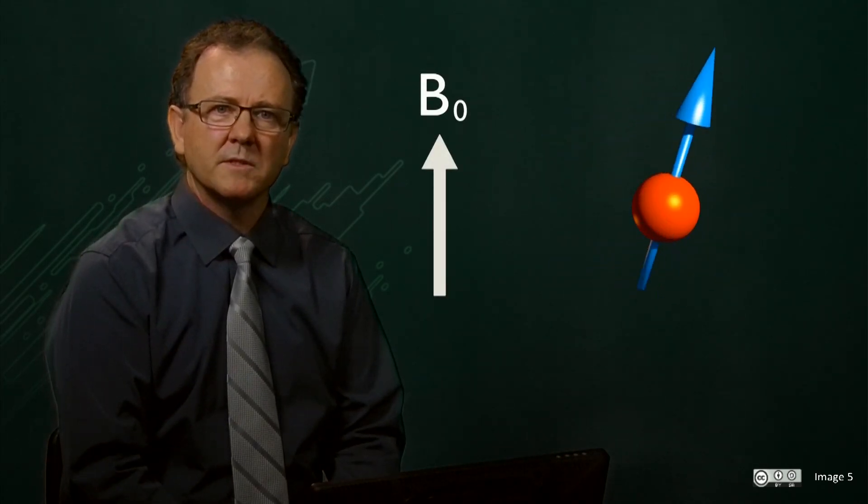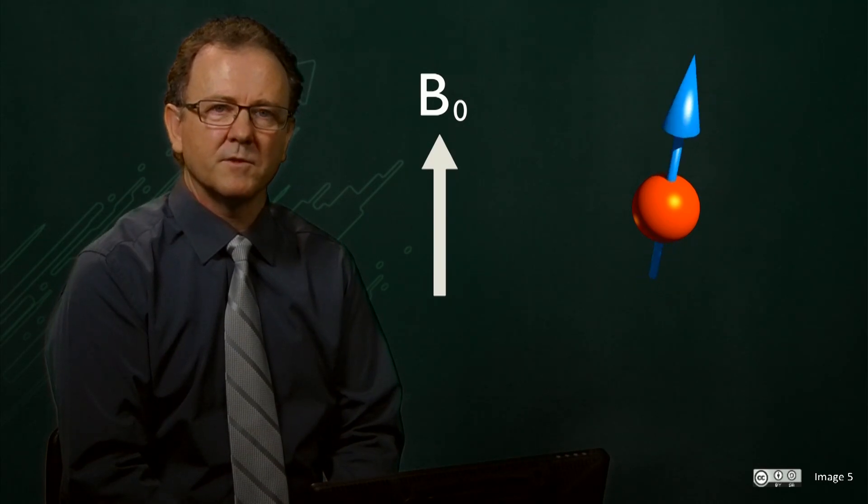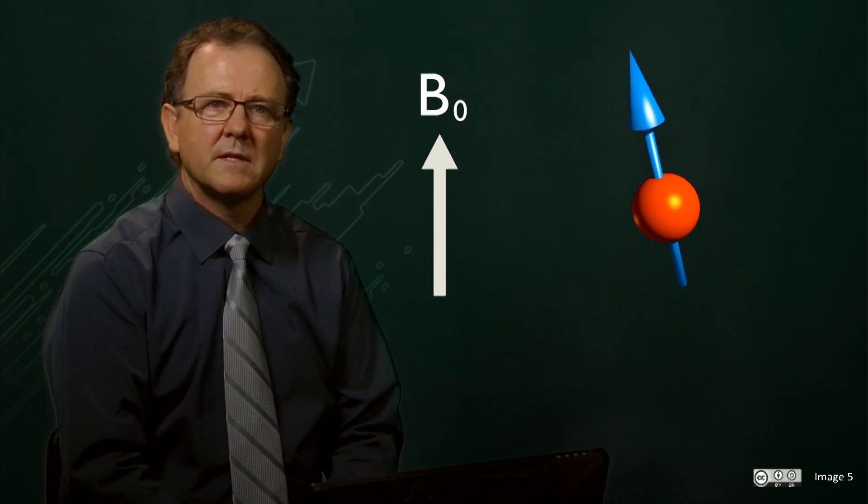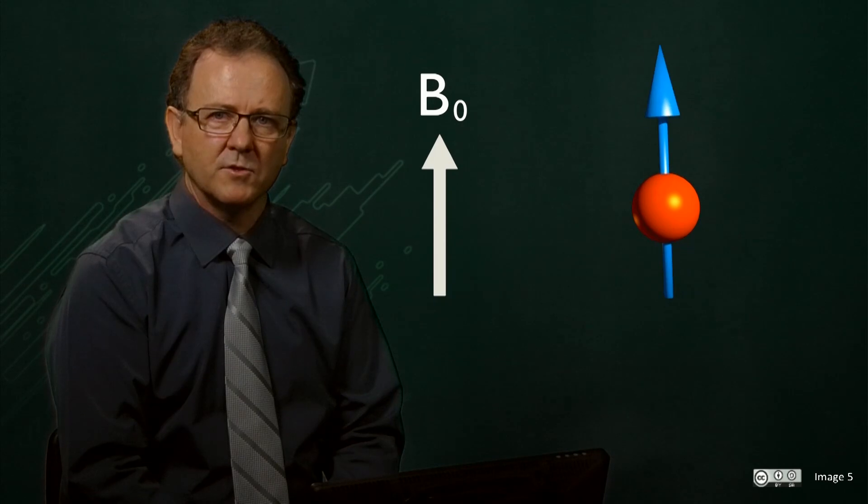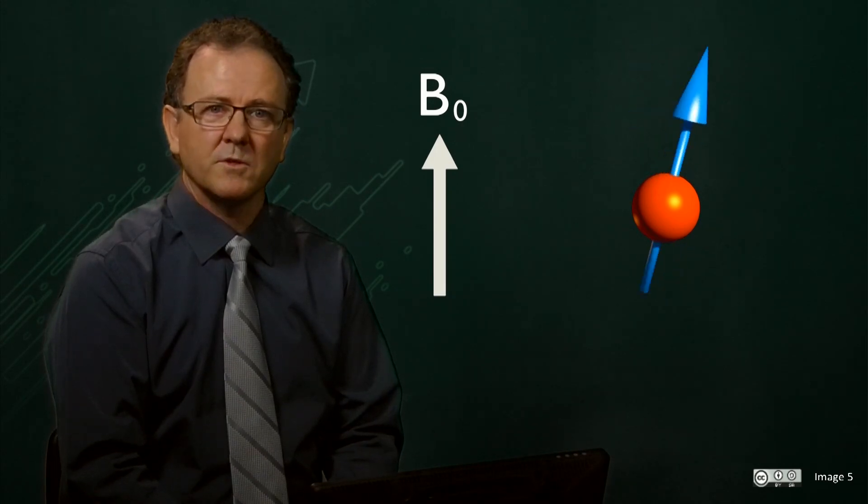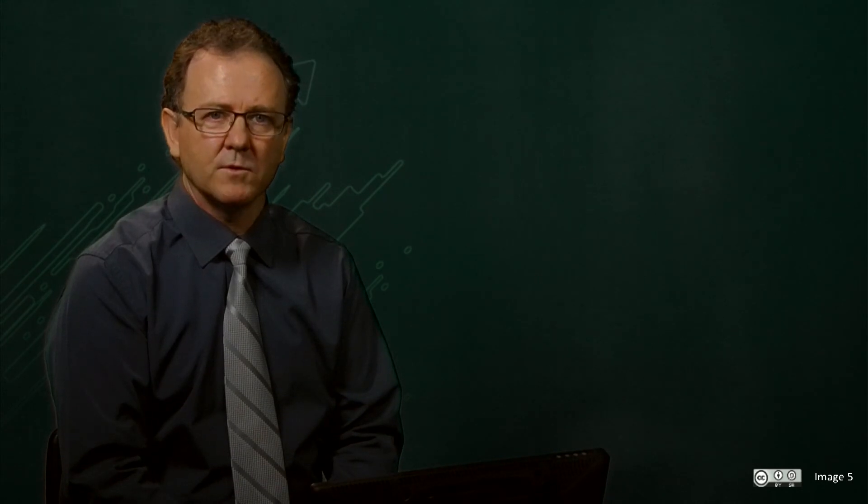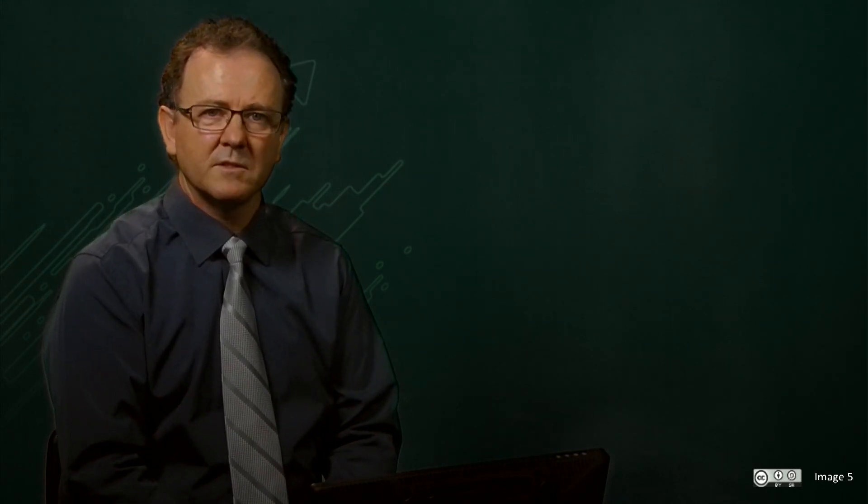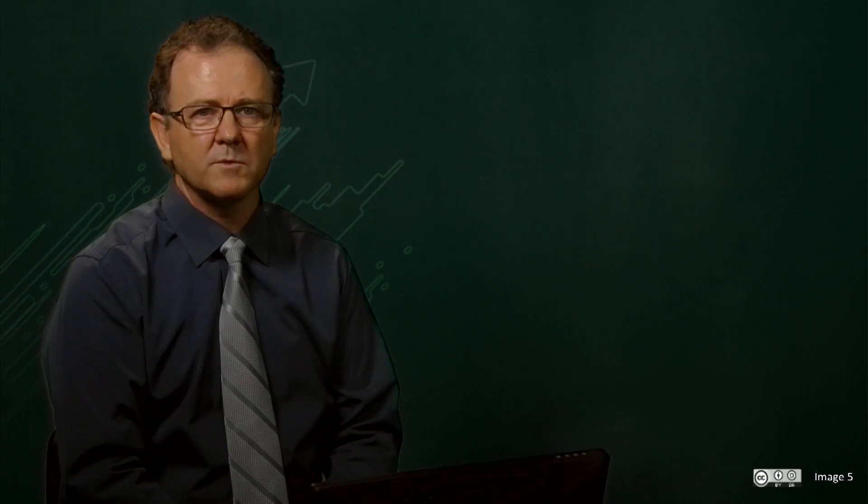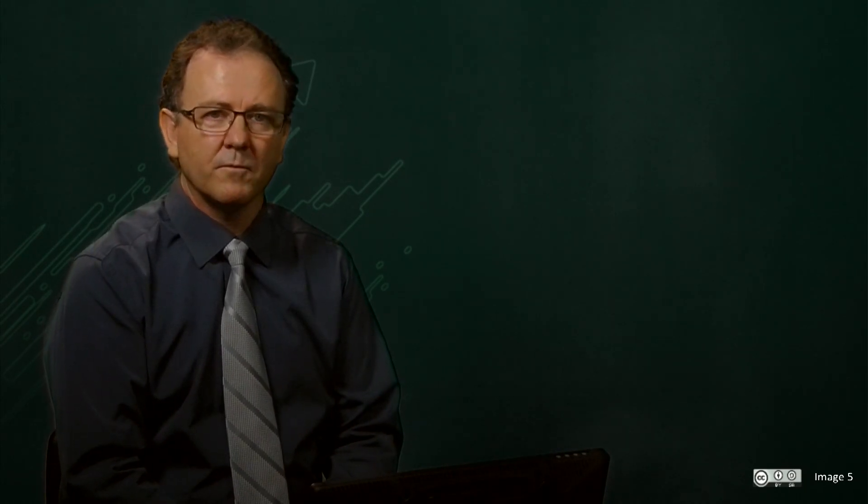You will notice that the magnetic moment does not point exactly in the direction of the field, but at an angle to it. This is due to the angular momentum of the nuclear spin. You will also see that the magnetic moment begins to rotate around the direction of the field at that angle. This is called precession and the rate of precession or frequency is known as the Larmor frequency.